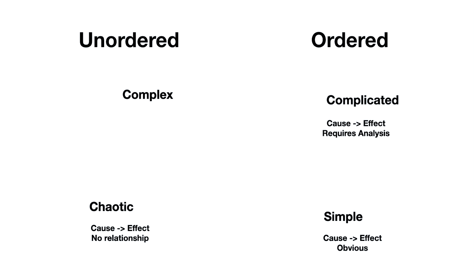The other type of unordered system is a complex system, where the relationship between cause and effect is only knowable in hindsight. To illustrate that: if I asked you one year ago to conceive of all the ways you would end up sitting here listening to me, it would be an impossible task. But if I ask you right now and go back a year, depending on your memory, you would be able to pinpoint every decision that led you to this moment. This is an example of knowing something only in hindsight.